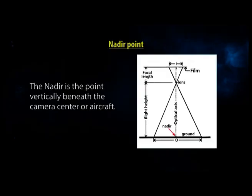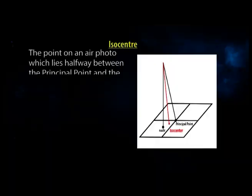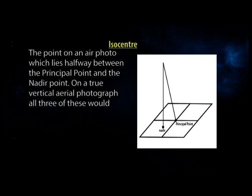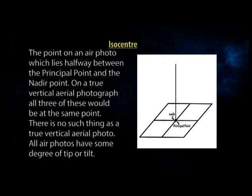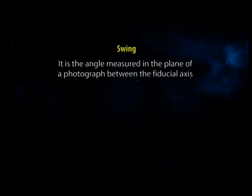Number 5: nadir point — the point vertically beneath the camera center or aircraft. Number 6: isocenter — the point on an air photo lying halfway between the principal point and the nadir point. On a true vertical aerial photograph, all three of these would be at the same point; however, there is no such thing as a truly vertical aerial photo, as all air photos have some degree of tip or tilt. Number 7: swing — the angle measured in the plane of a photograph between the fiducial axis and the actual flight line.